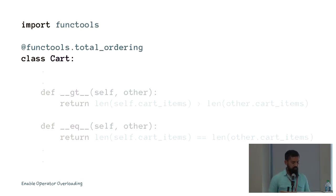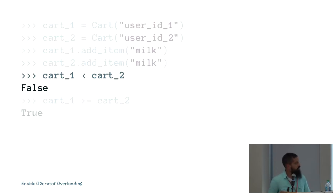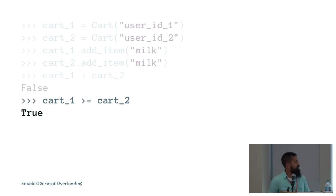Let's take a look at an example. I'm importing from functools and adding the total_ordering decorator to my class. I've provided implementations only for dunder gt and dunder eq. Now I can do checks like 'cart one < cart two' or 'cart one >= cart two' even though I have not provided explicit implementations for those magic methods.